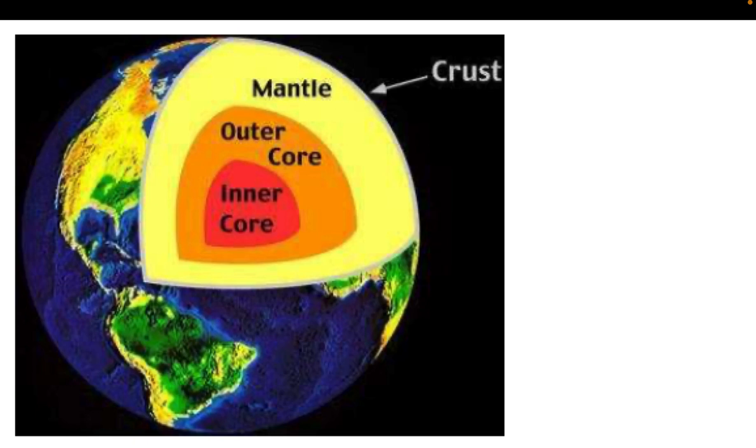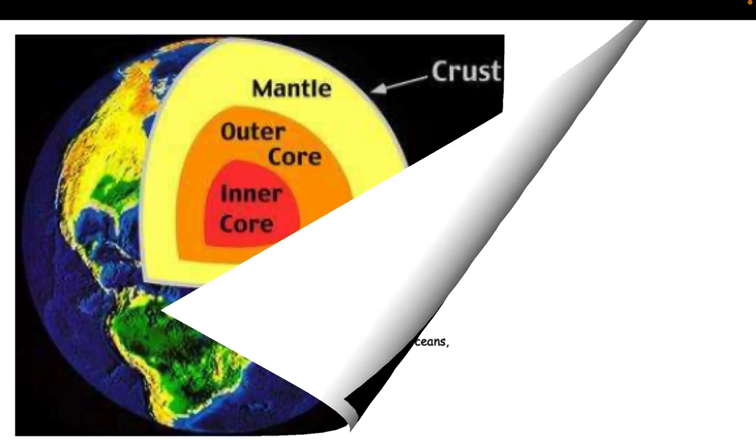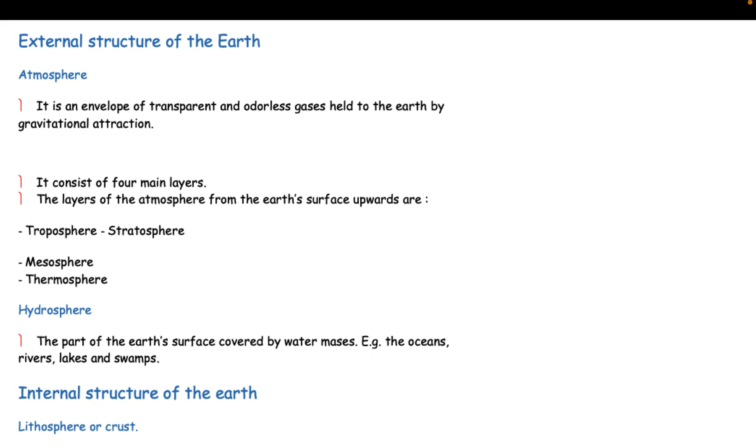External structure of the earth: Atmosphere. It is an envelope of transparent and odorless gases held to the earth by gravitational attraction. It consists of four main layers. The layers of the atmosphere from the earth's surface upwards are troposphere, stratosphere, mesosphere, and thermosphere.